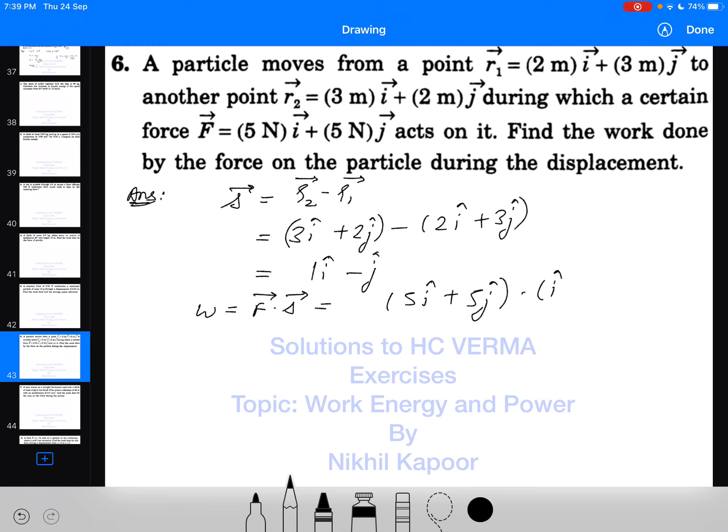Work done will be equal to: in dot product, i multiplied with i gives 5 times 5, and i squared becomes 1. j multiplied with j gives 5 times 5. So work done will be equal to zero. Zero work is done. The answer to this question is zero. Thank you.